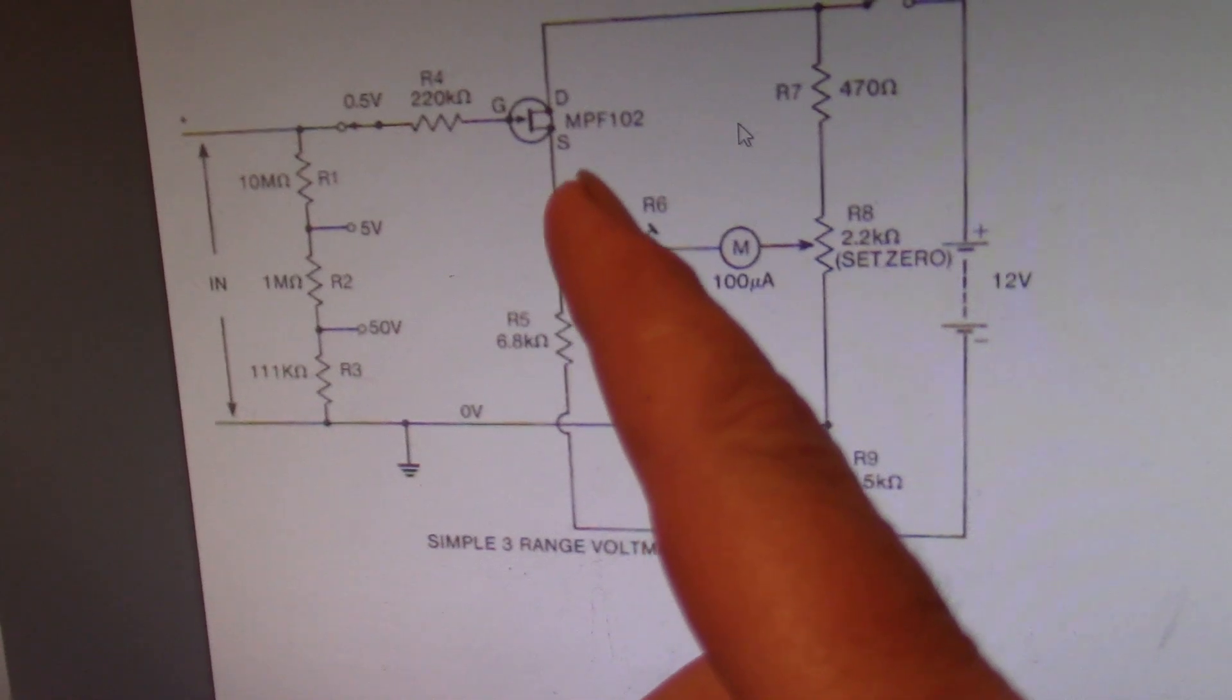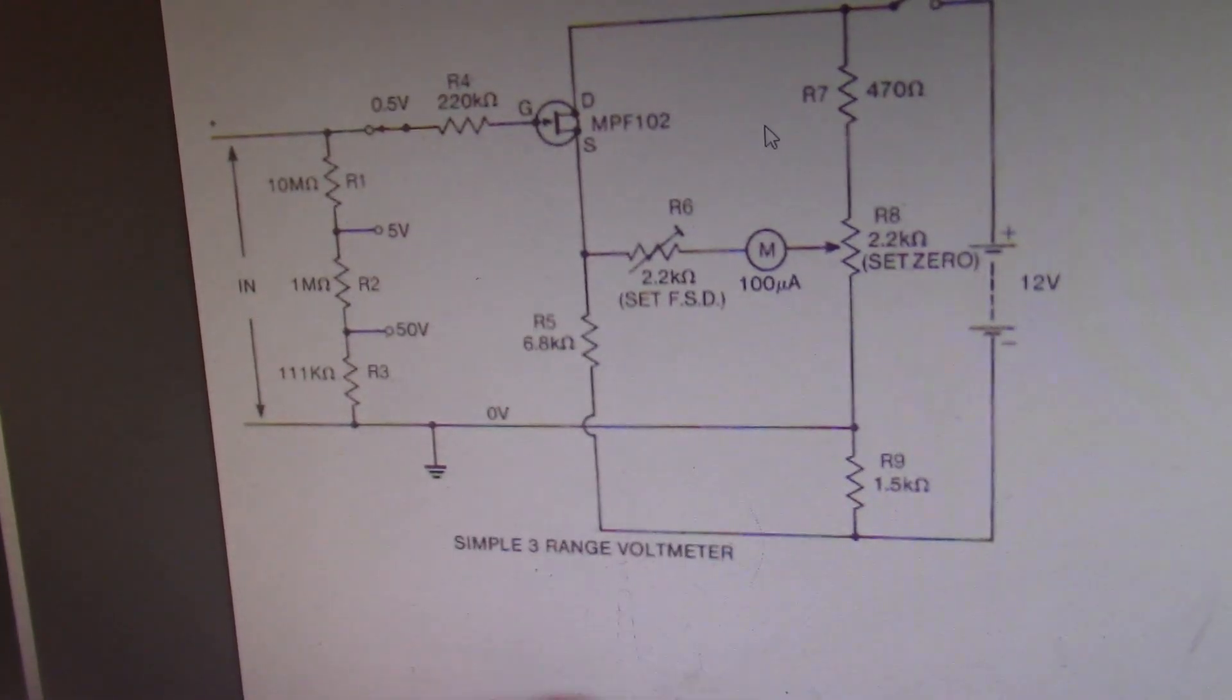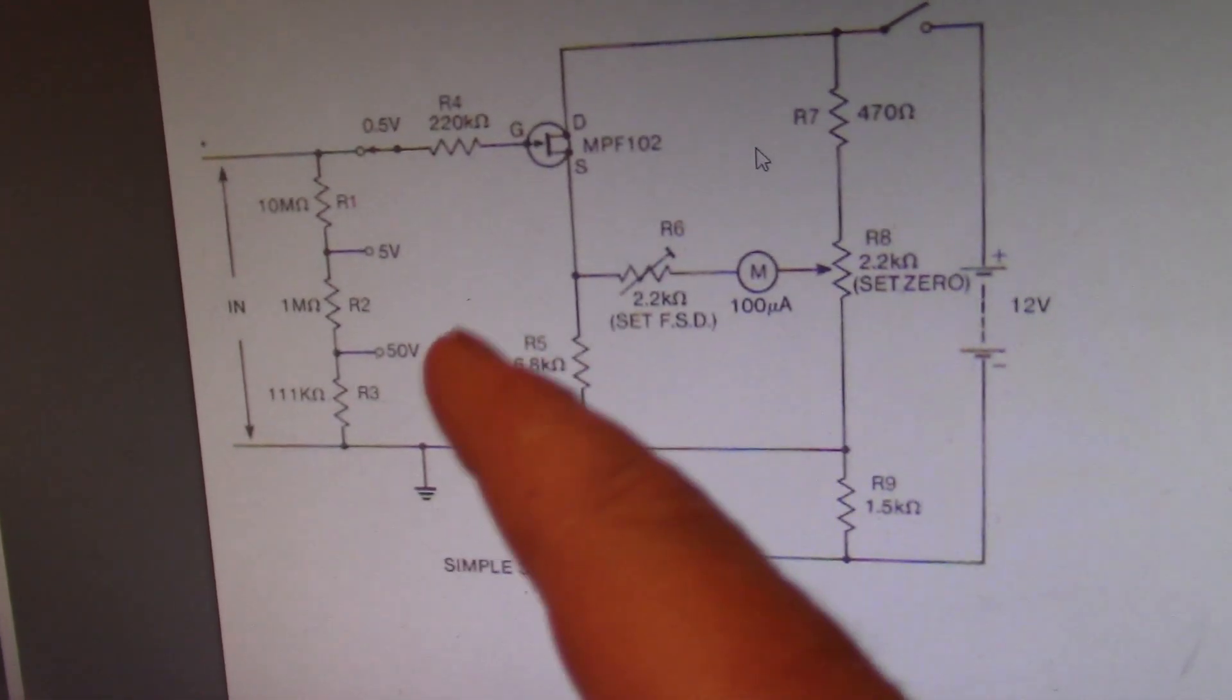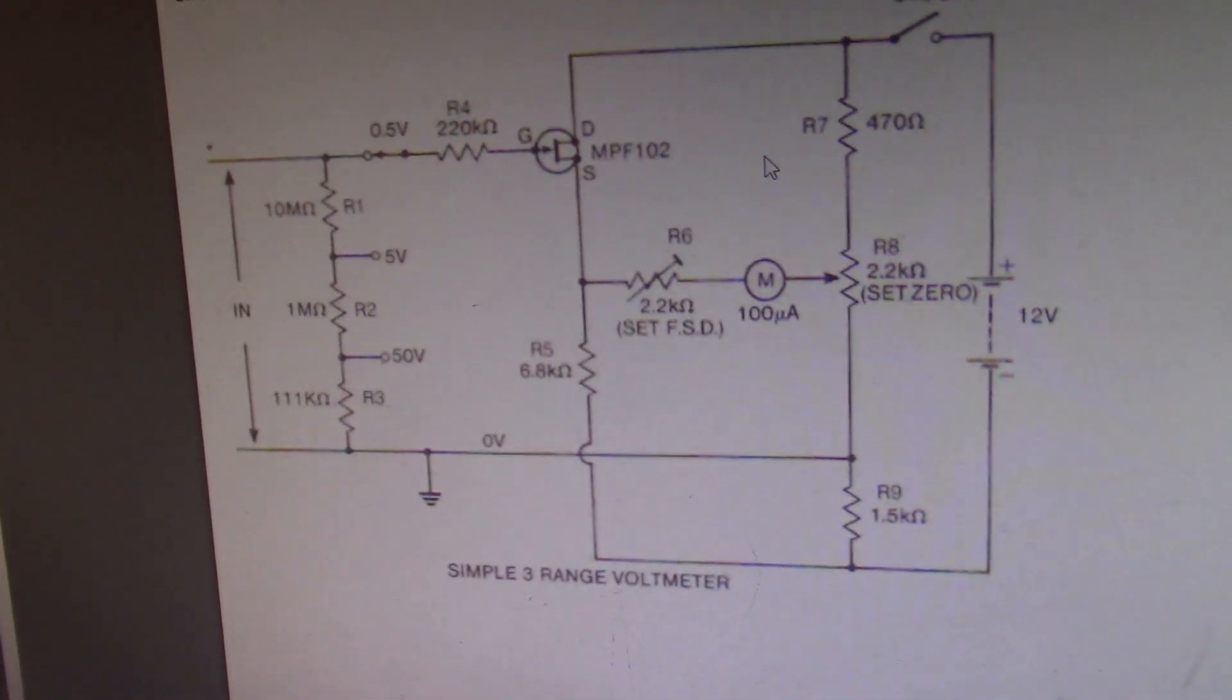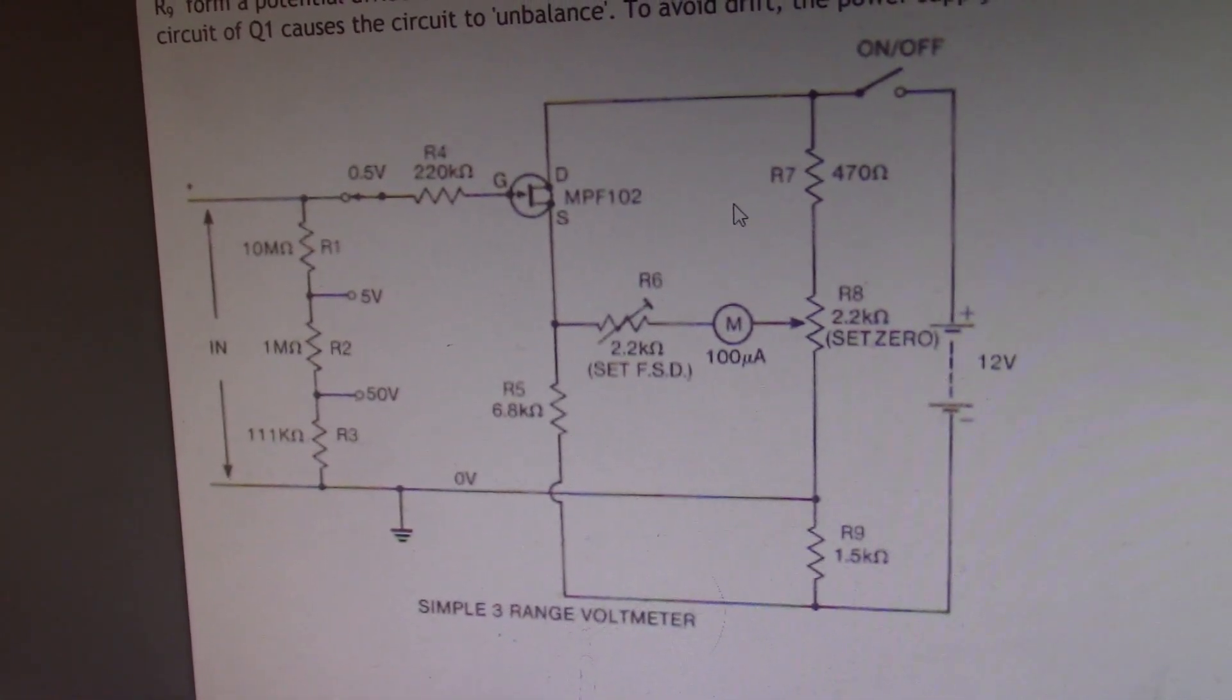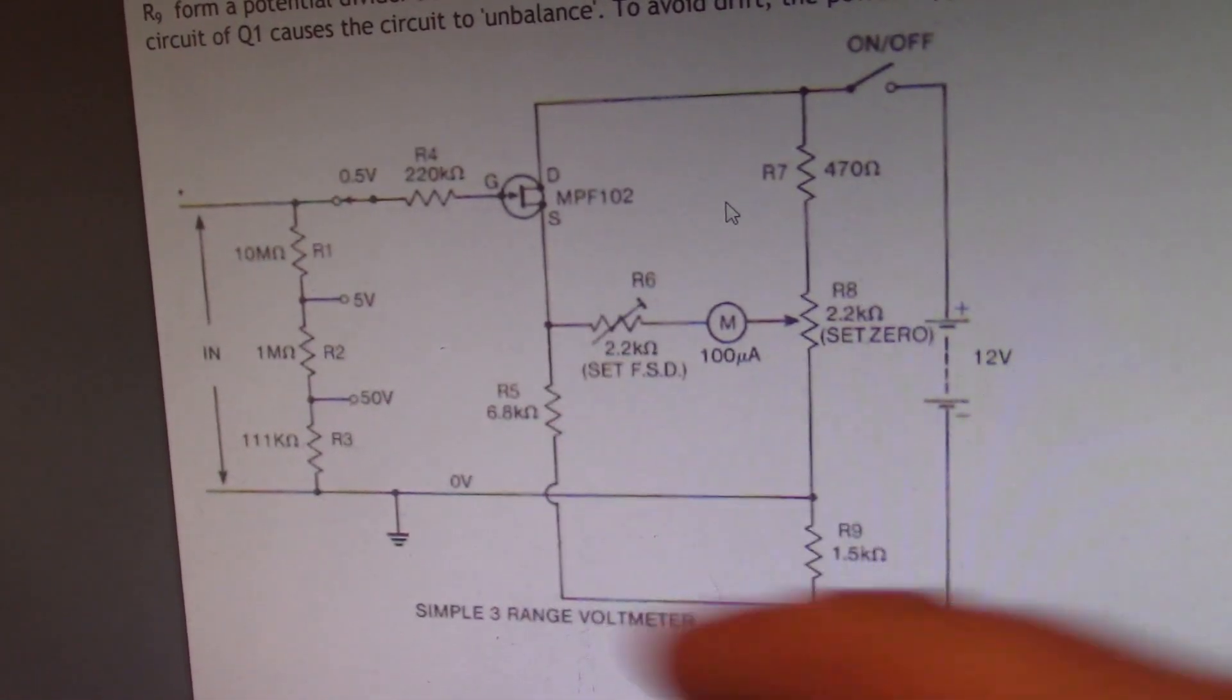You've got your FET, MPF102 doesn't have to be, but a similar type, and your voltage divider here. If you wanted to build this, you could vary the resistors from those shown, if you want to have different voltage ranges that you wish to measure. So it is very simple, very cheap, and in the old days they would have called this a vacuum tube voltmeter, as the early versions of this used a vacuum tube and not a FET.